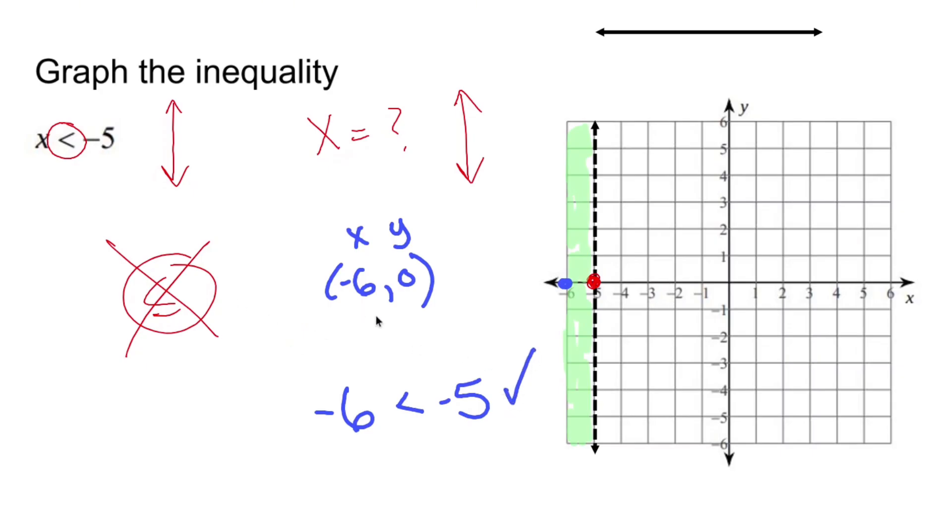So since we don't care about the y's, the y's really don't matter. You're just going to plug in the x value that you get. So anything to the left of negative 5 is going to be a possible solution no matter the y. And that's how you graph an inequality when you're given just one letter to use. The end.